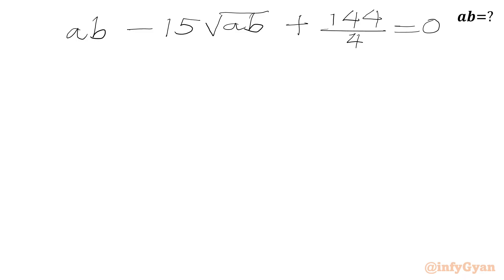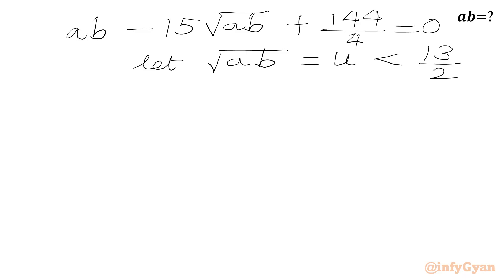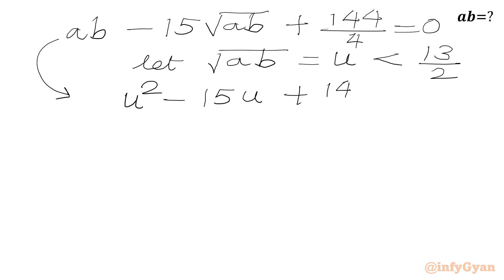This is a quadratic equation in √(ab). We use the substitution: let u equal √(ab). Since √(ab) must be less than 13 over 2, u must also be less than 13 over 2. Our quadratic equation becomes u² minus 15u plus 144 over 4 equal to 0.